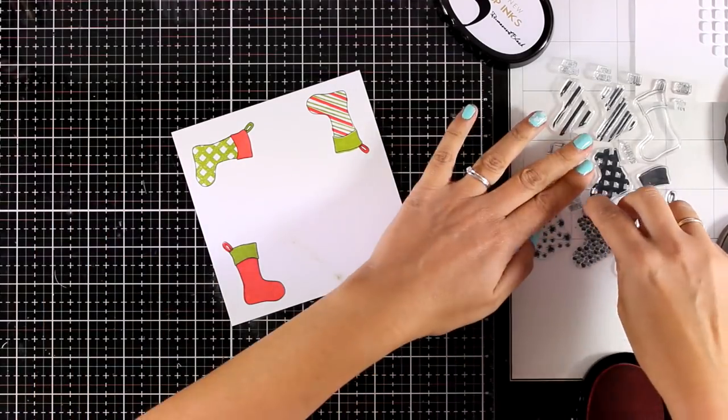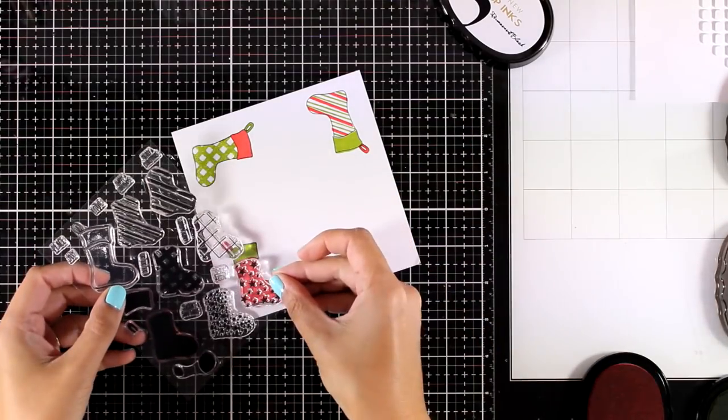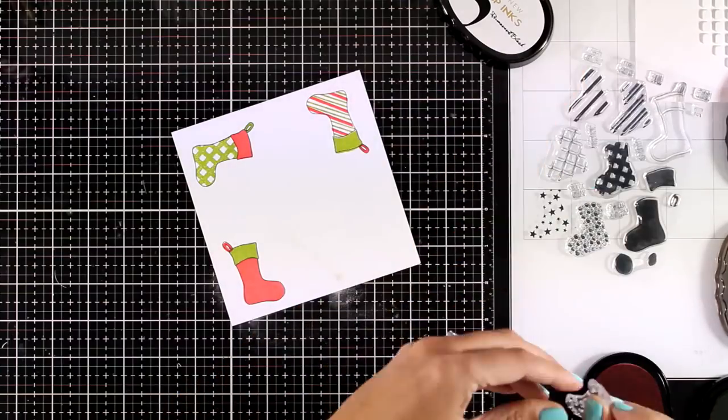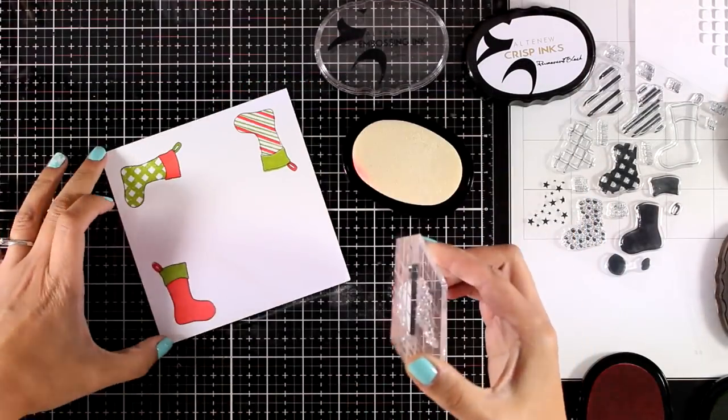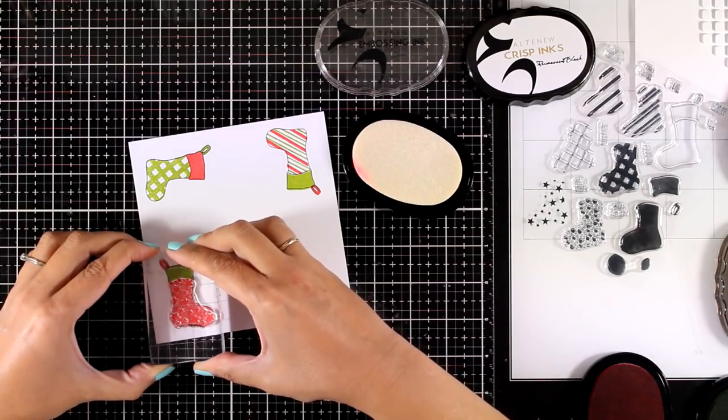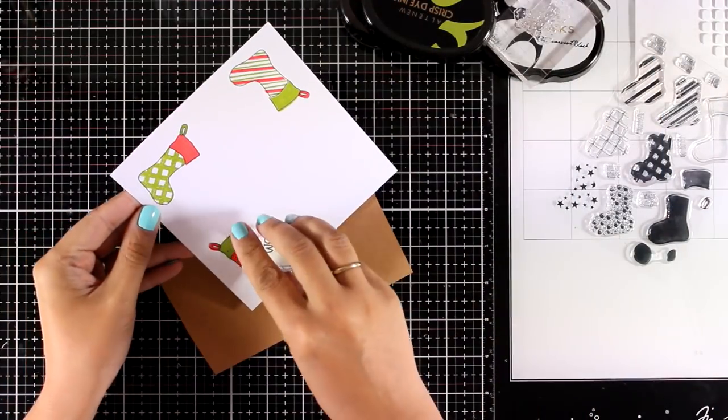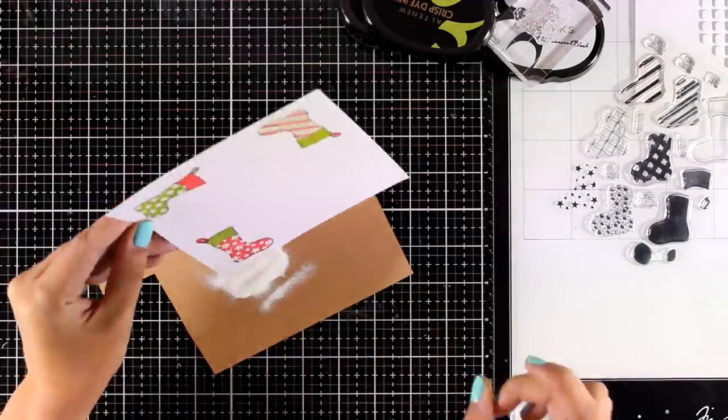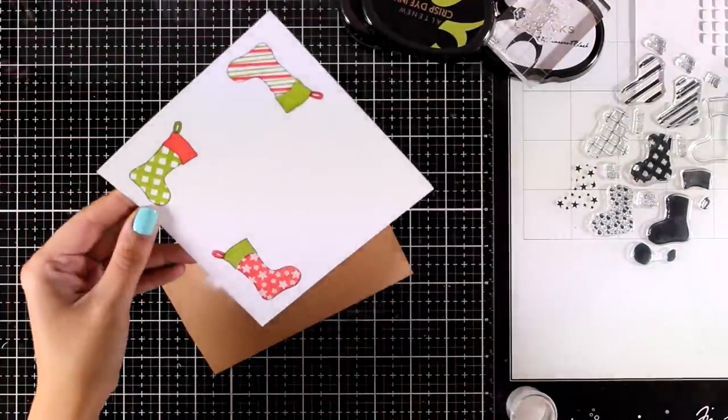And now that all my stockings are ready, I am going to do some embossing on the red part of this stocking. I was debating on which one of the designs to use. I decided to go with the stars and I'm going to stamp that with my embossing ink and then I'm going to apply my white embossing powder and heat set everything.